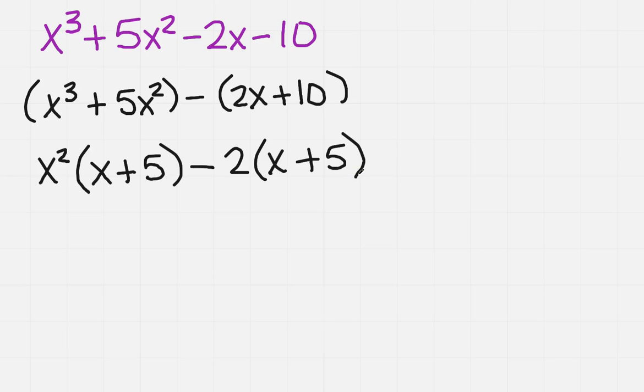Now, how do you know if you're on the right track? You're on the right track if you have a factor that's in common to both. And I see that each one of these has an x + 5, so I'm going in the right direction.